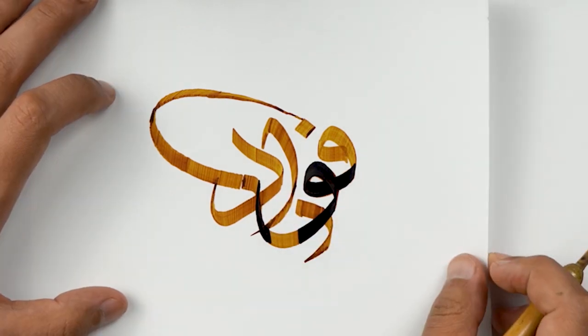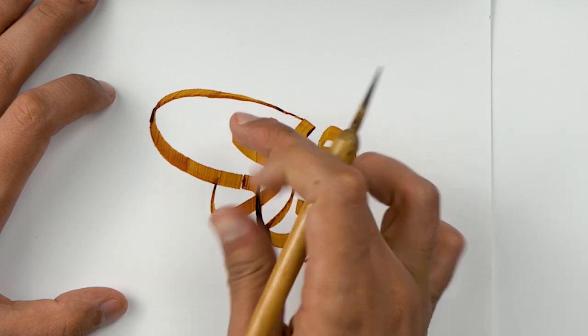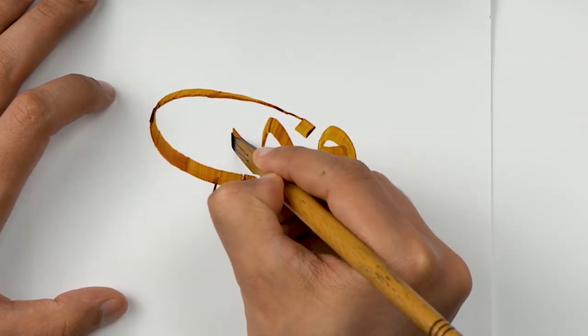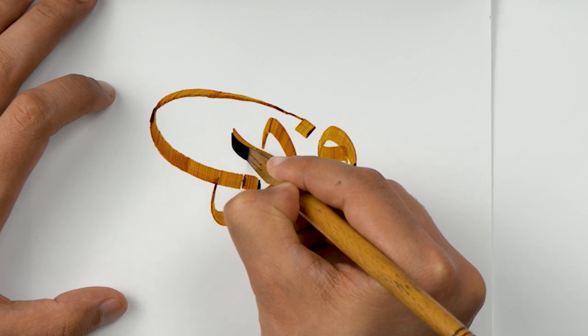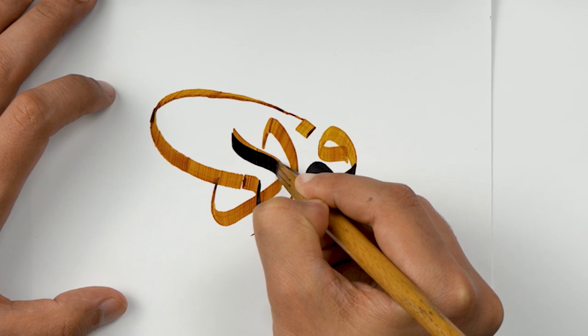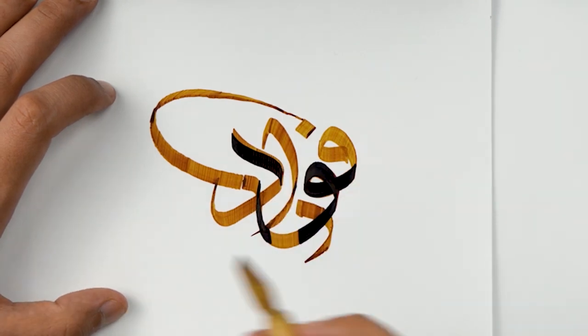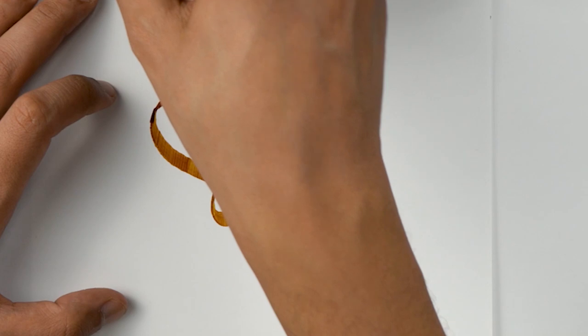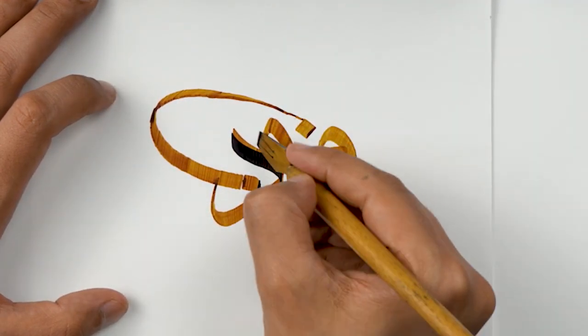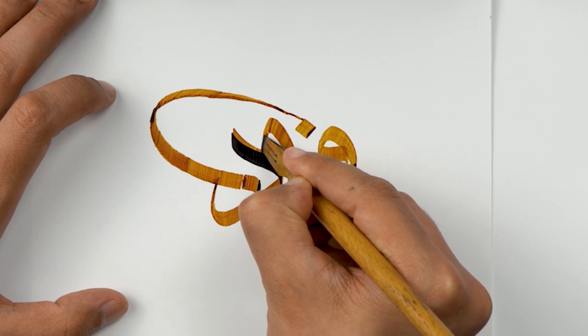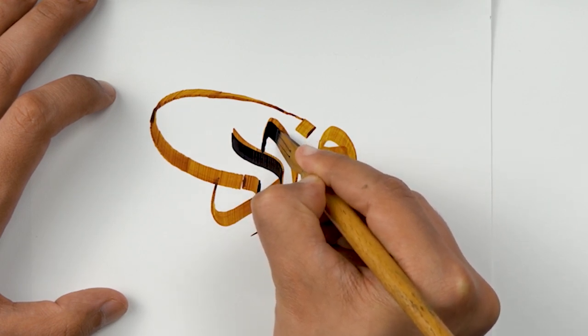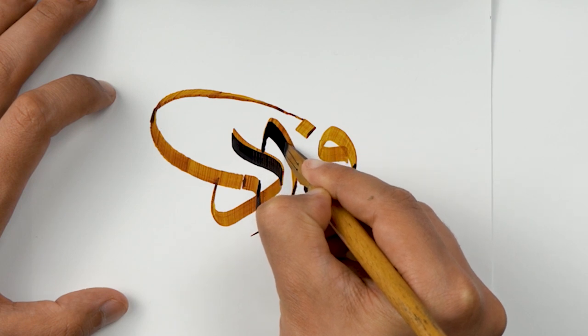I feel this dal somehow need to be a little bit closed to that side. Like this. And for this alif, I feel it needs some kind of inclination, like the slope of it is very straight. I feel like I can make it more inclined.